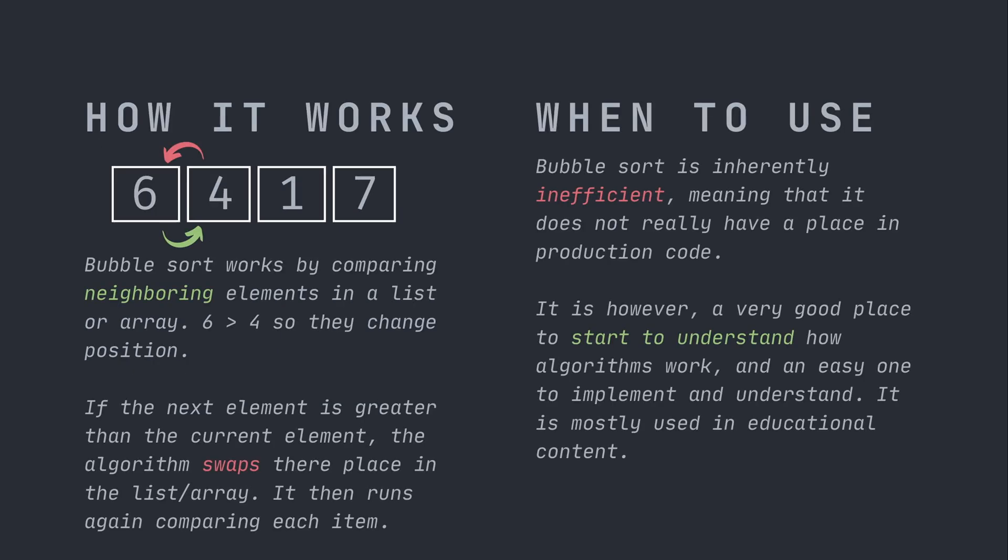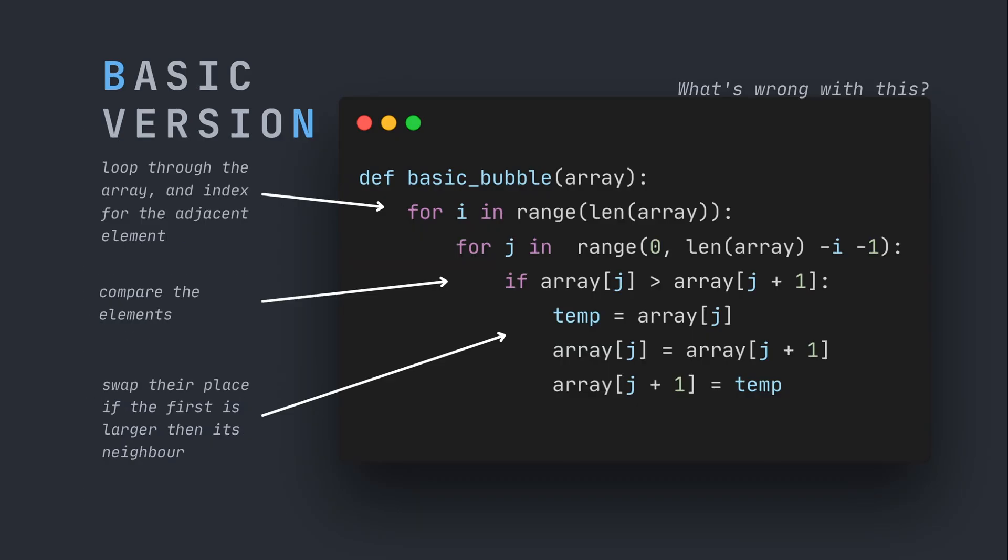So how it works is it will iterate over every item in the list and compare the elements that are next to each other, swapping them over so the highest number moves to the end of the list. As I said, it is inefficient, but it is a good place to understand how algorithms work.